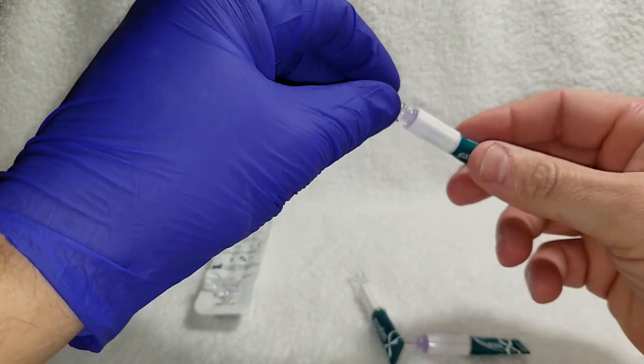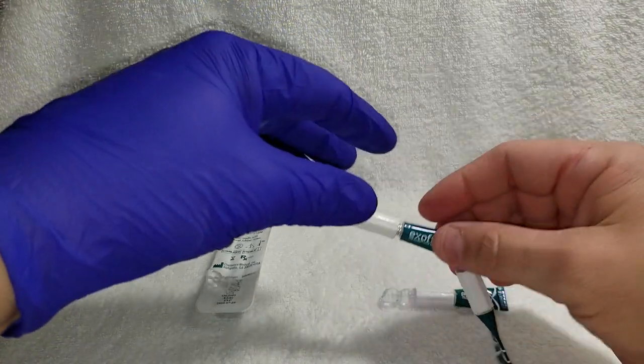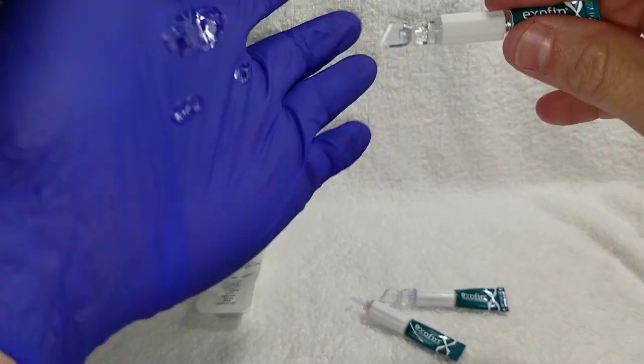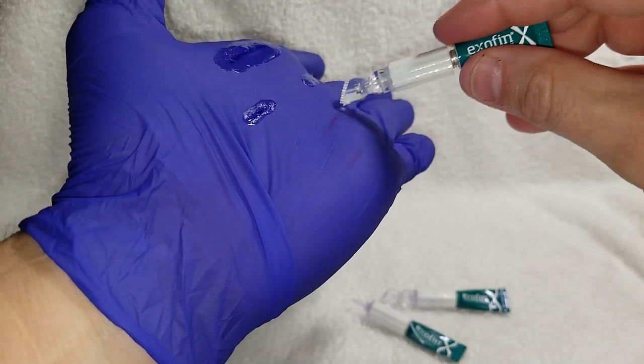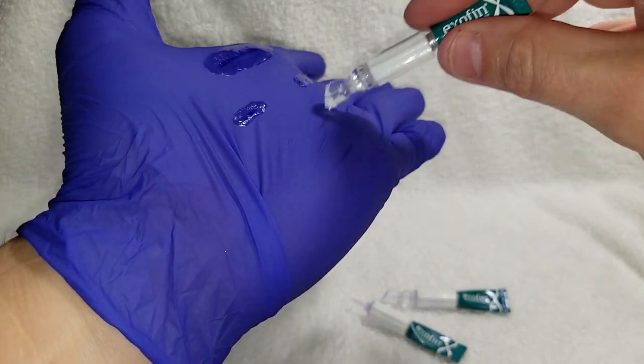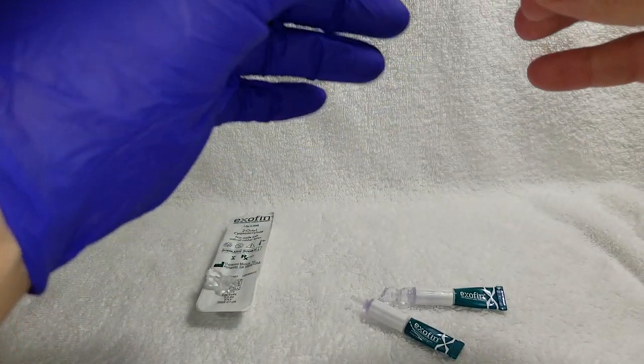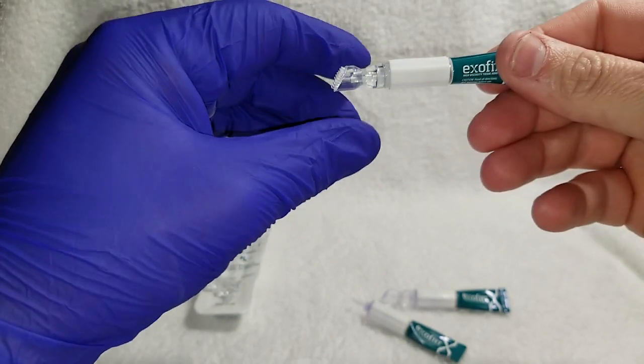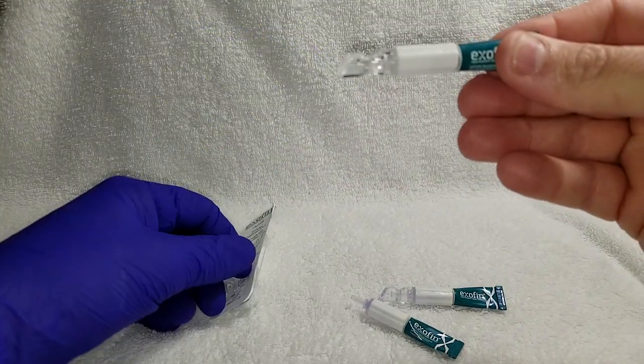The next application somebody had asked me to show you is we can actually use the angle of the brush tip and apply it. This works only if the wound is pretty much you're going to apply it down, it really doesn't work sideways. Same thing, you're going to take it, hold it, screw it all the way down. You can see the angle of the brush tip.